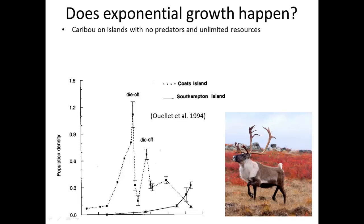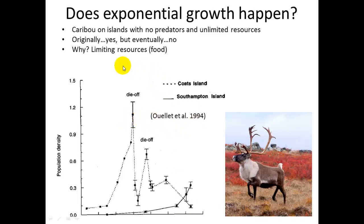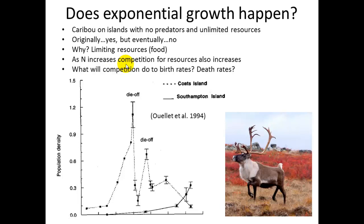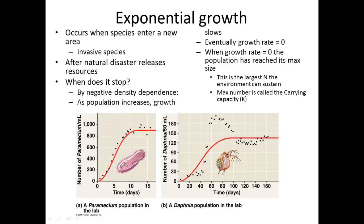Does exponential growth actually happen? Yes. They put caribou on an island that had none, looked at the population change over time, and you can see a J-curve. But eventually something happened — it ran out of resources, food, and also had disease. Competition caused birth rates to decrease and death rates to increase, leading to a population decrease. So exponential growth rate is always temporary, but it does occur when you have a colonizing species that has access to abundant resources, such as an invasive species.